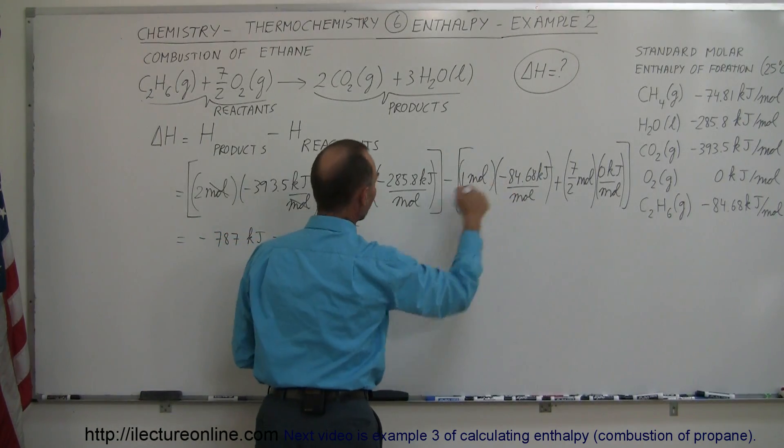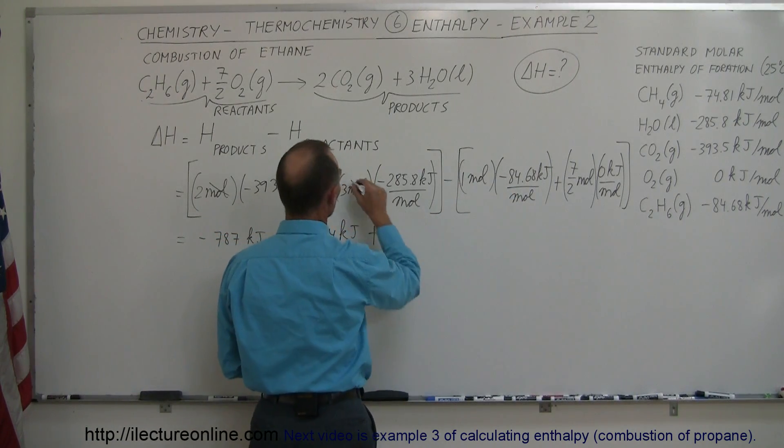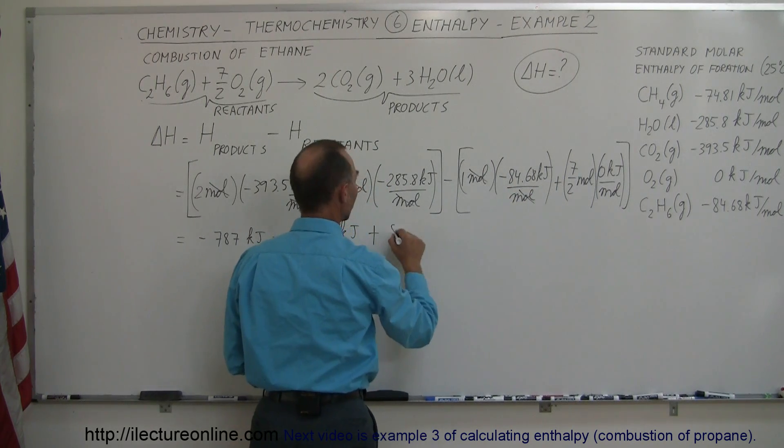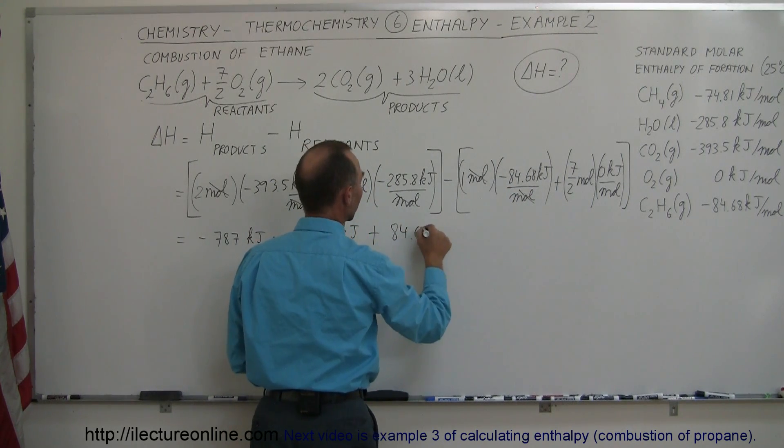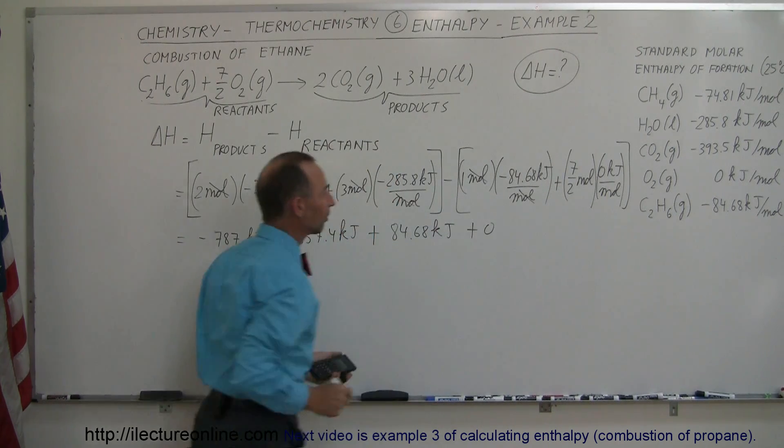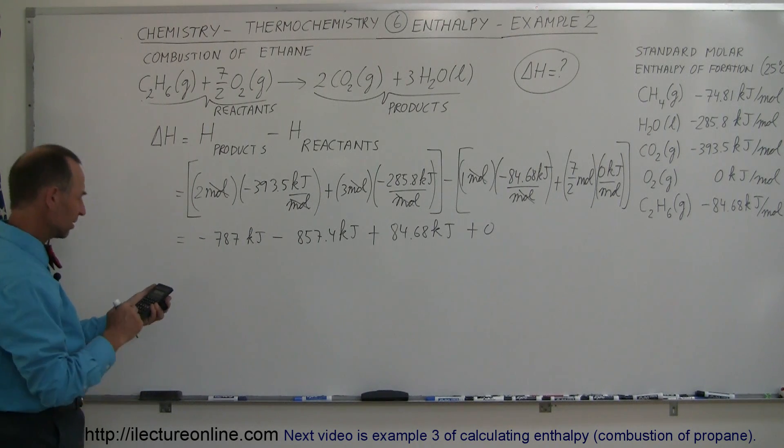And then we have minus times minus, that becomes plus. Notice the moles cancel out here, the moles cancel out here. Minus times minus plus, that would be plus 84.68 kJ. And finally plus 0, because that adds up to 0. Now all we have to do is add these together.